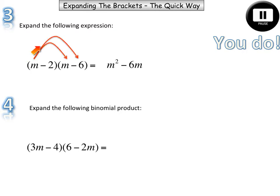Okay, so m times m is m squared. m times negative 6. Negative 6m. Negative 2 times m. Negative 2m. Negative 2 times negative 6. Double negative. When you multiply those two double negatives you get positive. And 2 6s are 12.